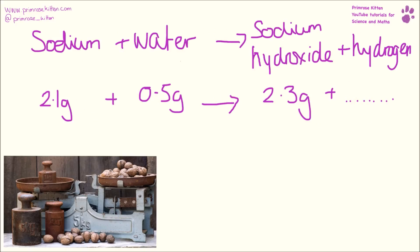If we have 0.5 grams of hydrogen, making 2.3 grams of sodium hydroxide and 0.3 grams of hydrogen.